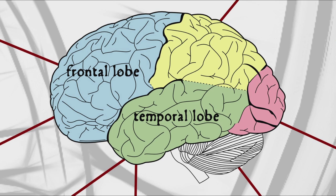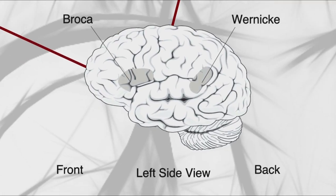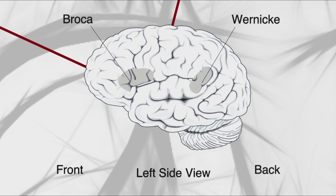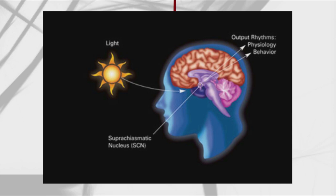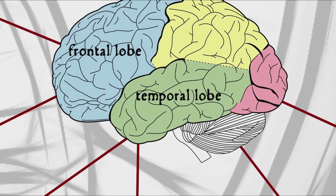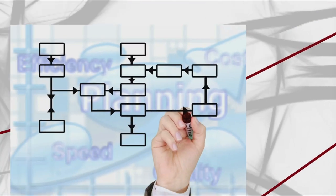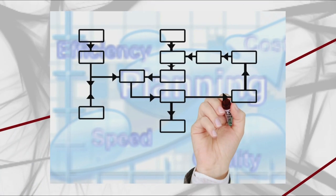Speaking of the temporal lobe — though it doesn't specifically have anything to do with time — one of its functions is language processing, specifically in the area known as Wernicke's area, named after Karl Wernicke, which is responsible for language comprehension, as opposed to language production which is handled by Broca's area in the frontal lobe. It also turns out that there doesn't seem to be one time centre of the brain, but rather many distributed systems, one of which is the suprachiasmatic nucleus, a tiny region in the hypothalamus which regulates daily circadian rhythms. Other brain areas particularly important for our purposes are the frontal lobe and prefrontal cortex, which are implicated in planning and voluntary action — operations in the domain of the future.